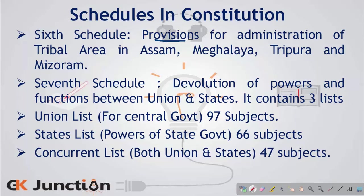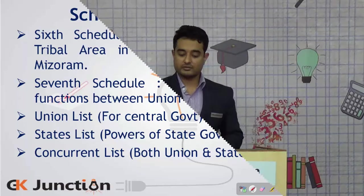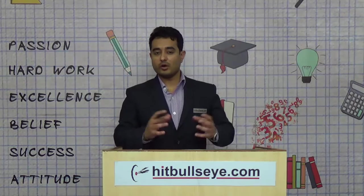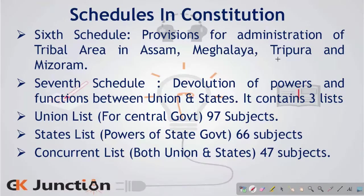The sixth schedule covers autonomous areas in four states: Assam, Meghalaya, Tripura and Mizoram. In Assam there are four districts — Bodoland, Karbi Anglong and North Cachar Hills. In Meghalaya there are three tribal areas: Garo, Khasi and Jaintia. In Tripura there is the Tripura Tribal Hill Area and in Mizoram there are Chakma Hills, Mara Hills and Lai Hills. These areas are provided certain provisions for self-governance or their own administration.